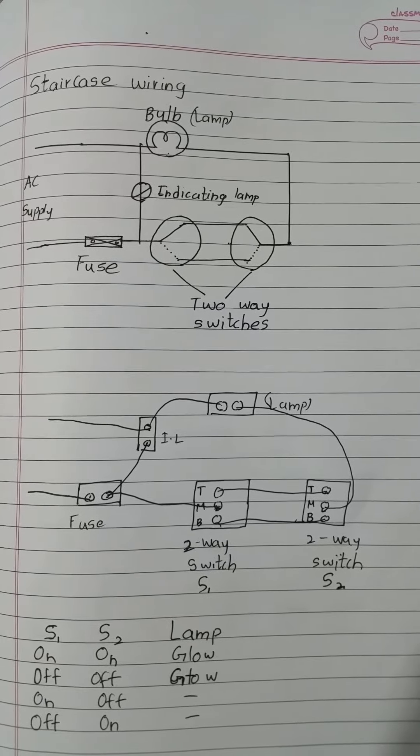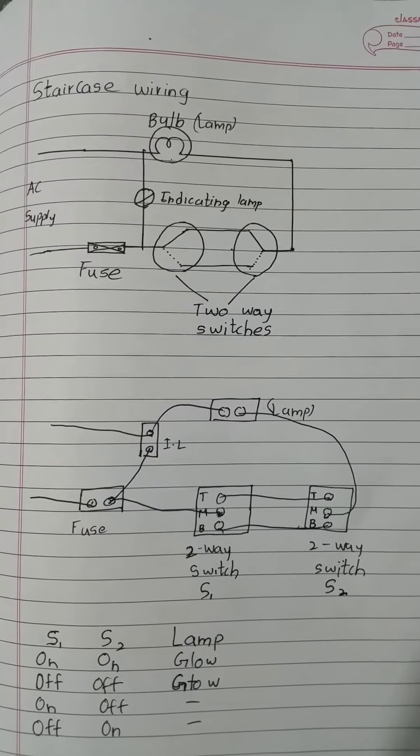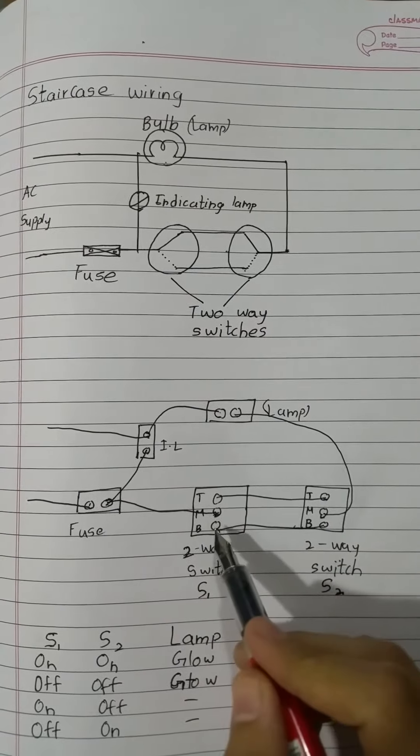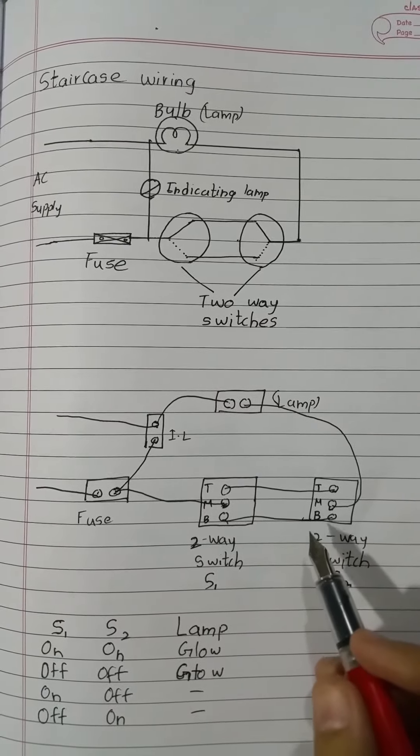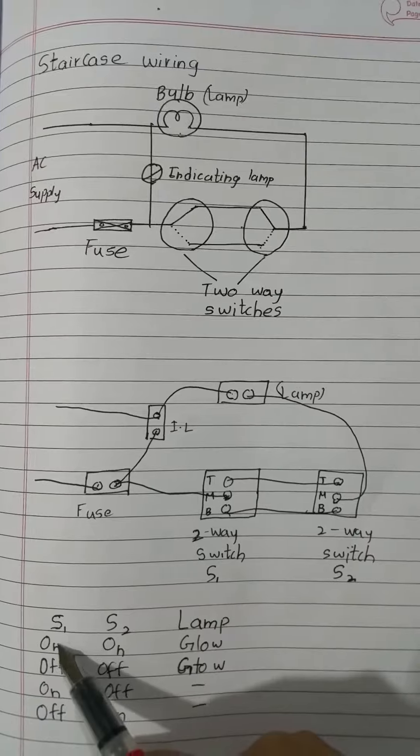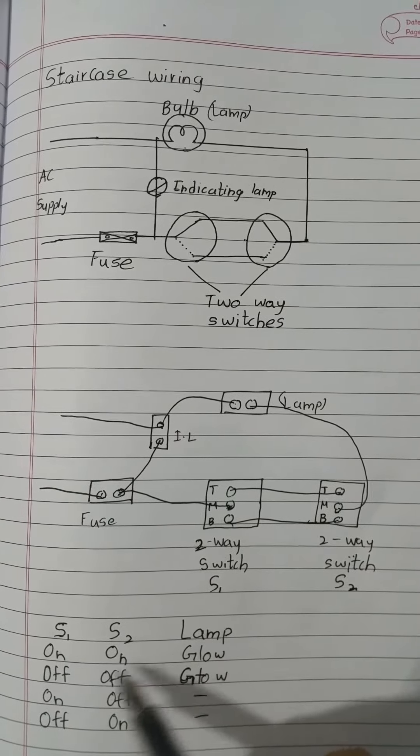of the switch. So when the current flows, it will flow from the top or it will flow from the bottom. So the switching table is this: if both are on, then the switch will go. Both are